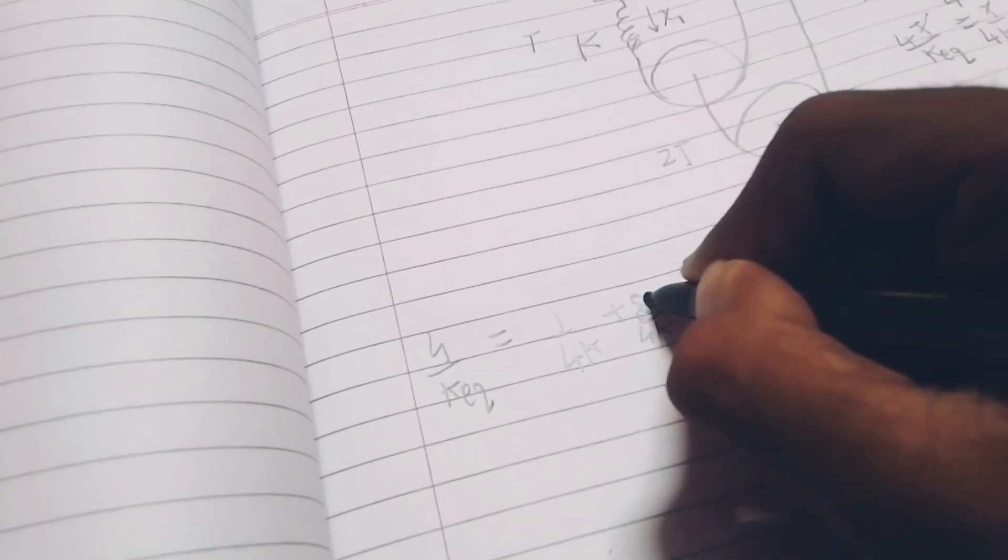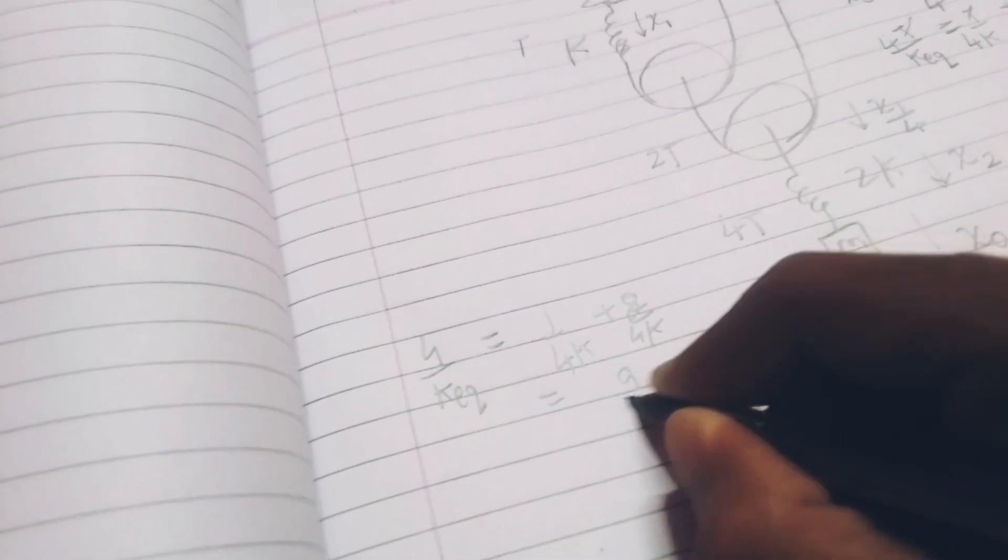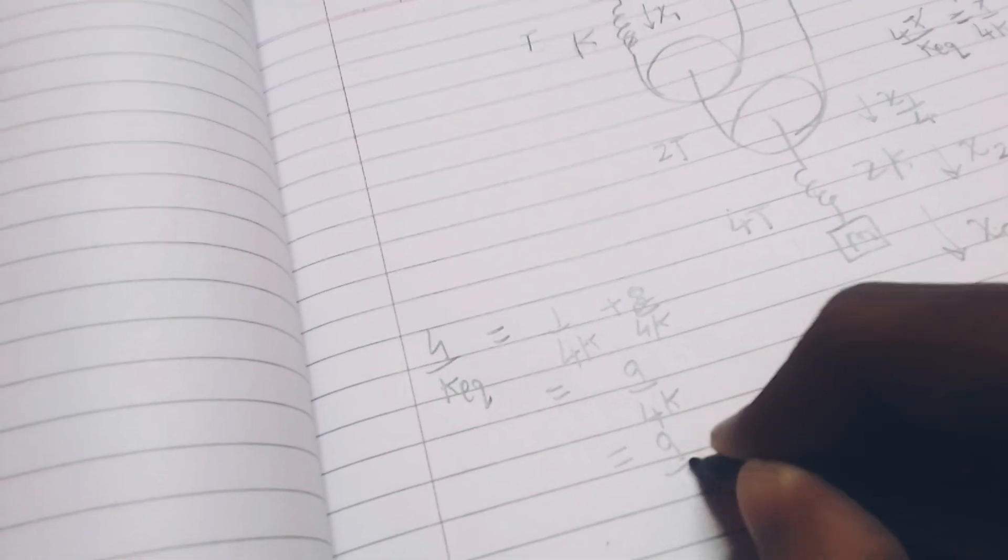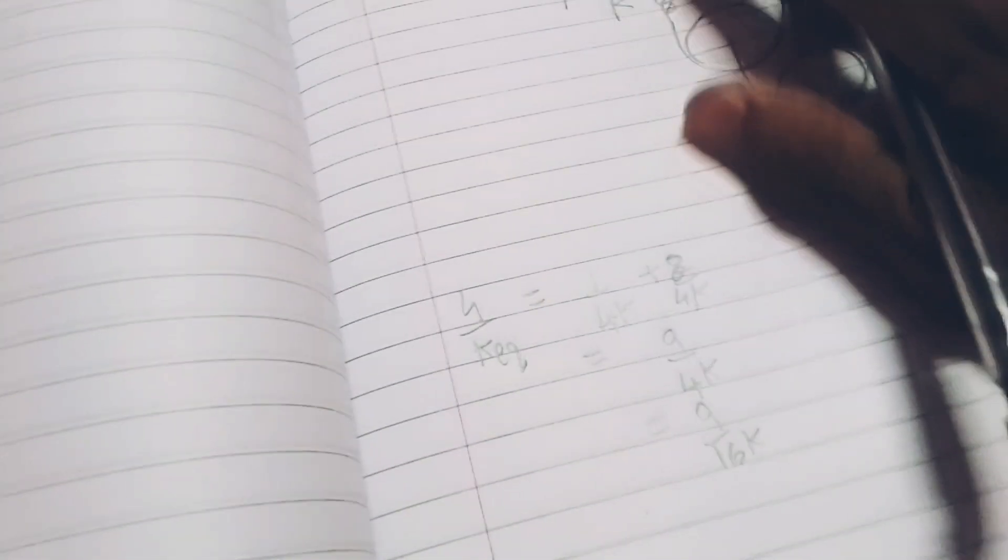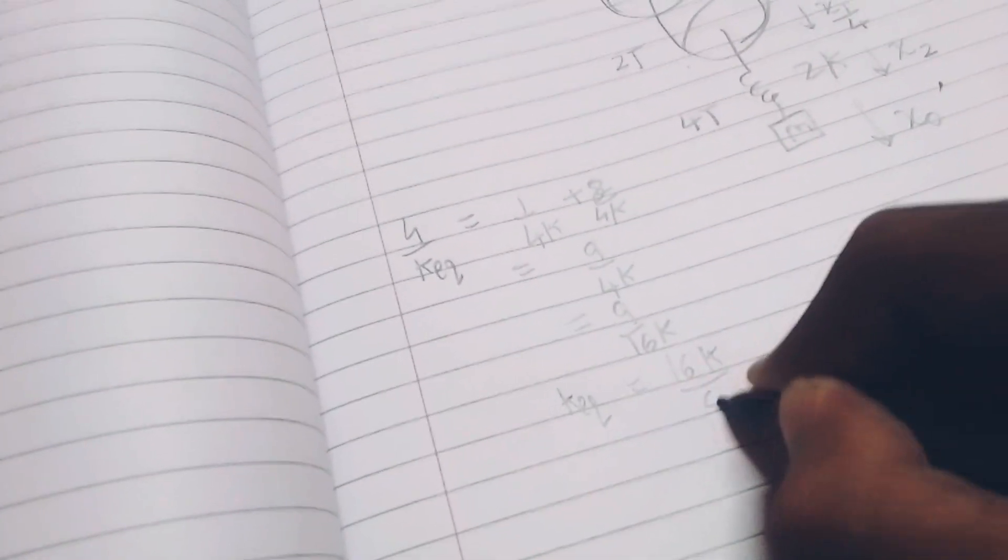Or, I can write it as 8 by 4k. And, this is 9 by 4k. So, I have k equivalent equal to 16k by 9.